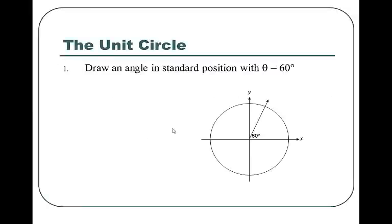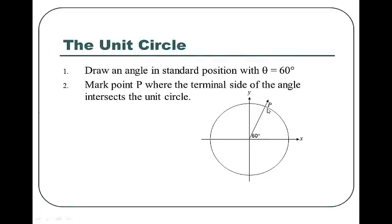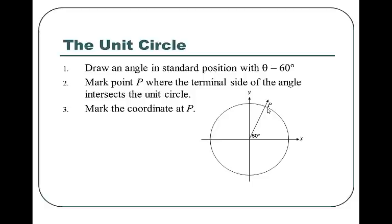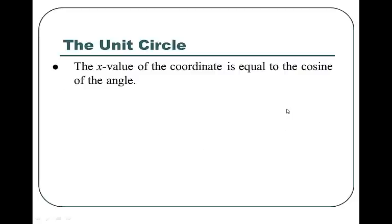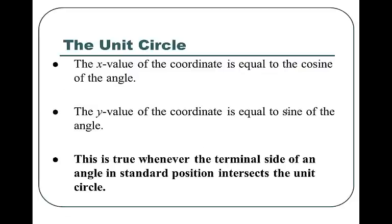So we draw an angle in standard position with theta equals 60 degrees. We're really interested in the intersection point between the terminal side of the 60 degree angle and the unit circle. We mark that point P, and that coordinate is 1/2 comma square root of 3 over 2. So now I know the cosine and the sine of a 60 degree angle, because the x value is the cosine and the y value is the sine — x is cosine, y is sine.